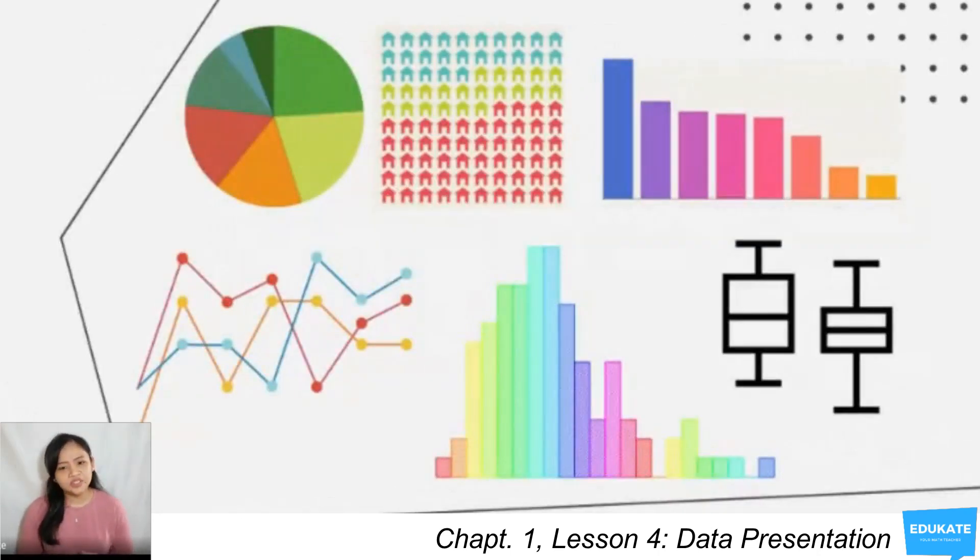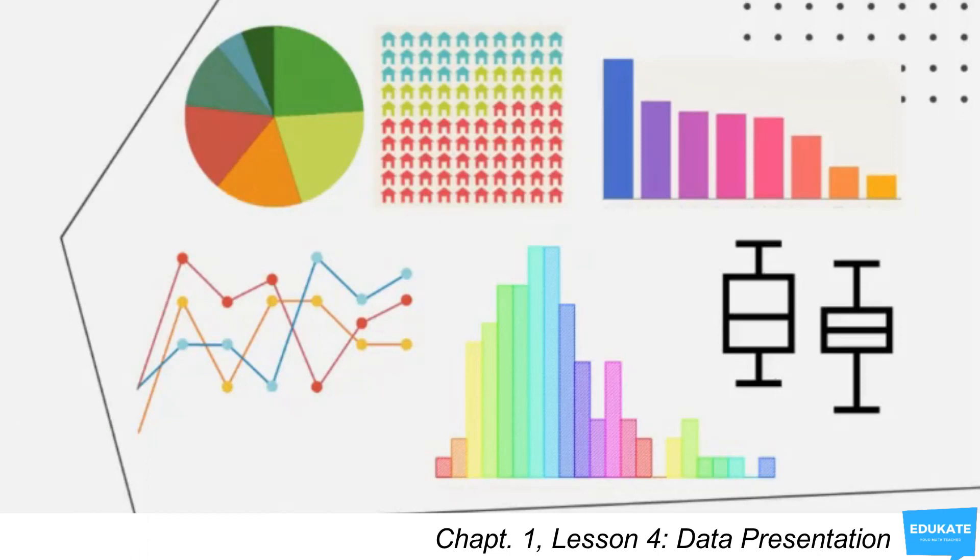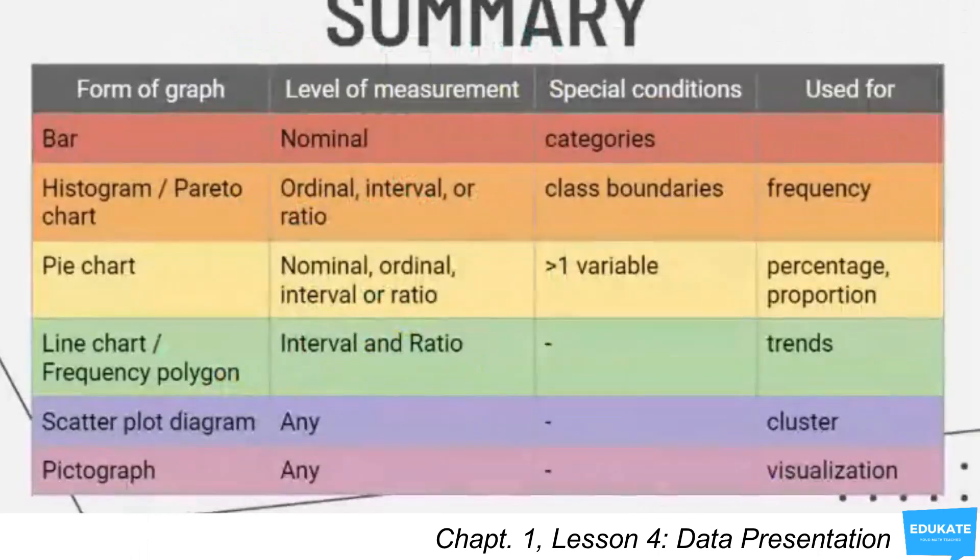In analysis, we determine the most appropriate graph to use by looking at the variable's level of measurement. In summary, you have the form of graphs, the level of measurements, the special conditions, and what it is generally used for.